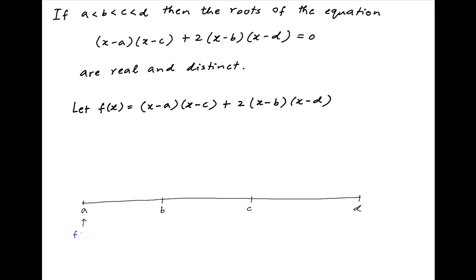At x equal to a, the function equals 2 times (a minus b)(a minus d). Since a is less than b and a is less than d, both factors are negative, so their product is positive. Therefore, the value of f(a) is positive. At x equal to b, the function equals (b minus a)(b minus c). Since b minus a is positive and b minus c is negative, the value of f(b) is negative.